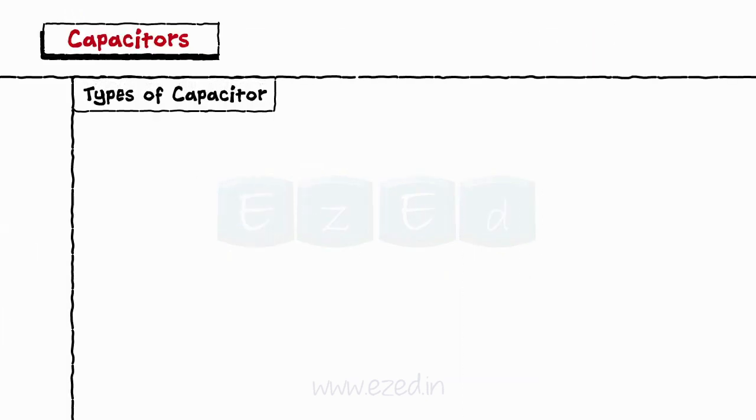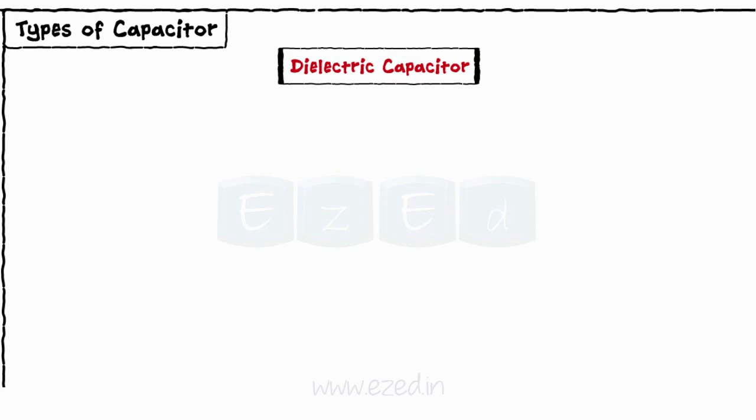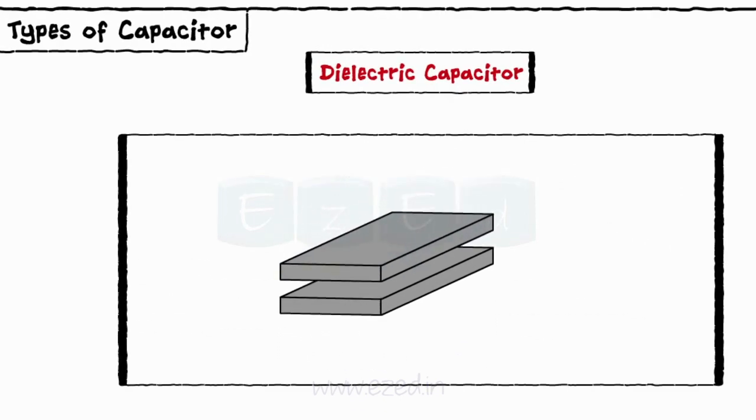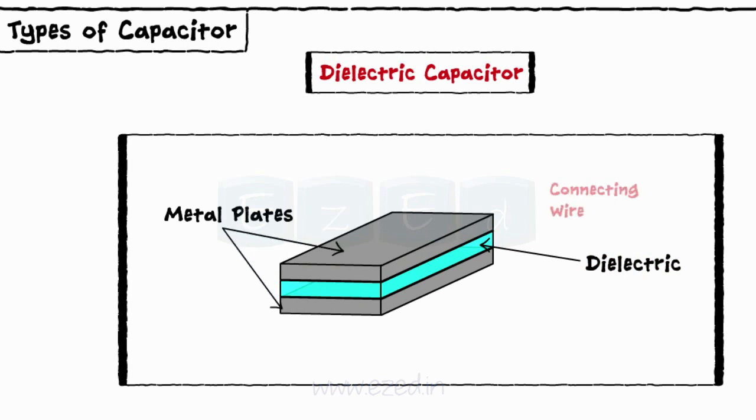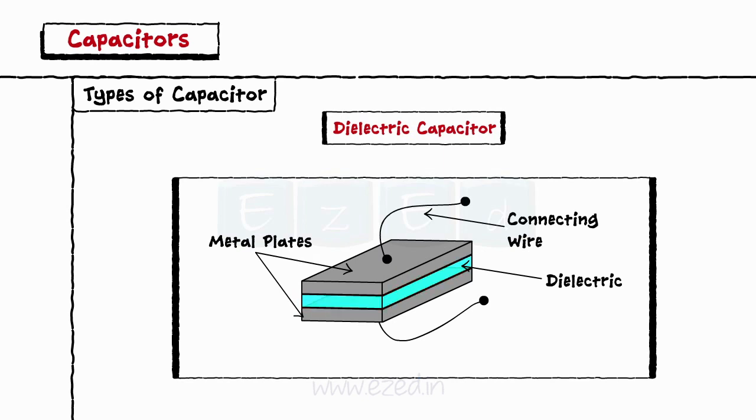The first type of capacitor is the dielectric capacitor. A dielectric capacitor consists of two metal plates placed in parallel with each other. A layer of the dielectric material is developed between the two metal plates. The connecting terminals or wires are taken out from each metal terminal. Dielectric is a substance or body having very low electric conductivity.